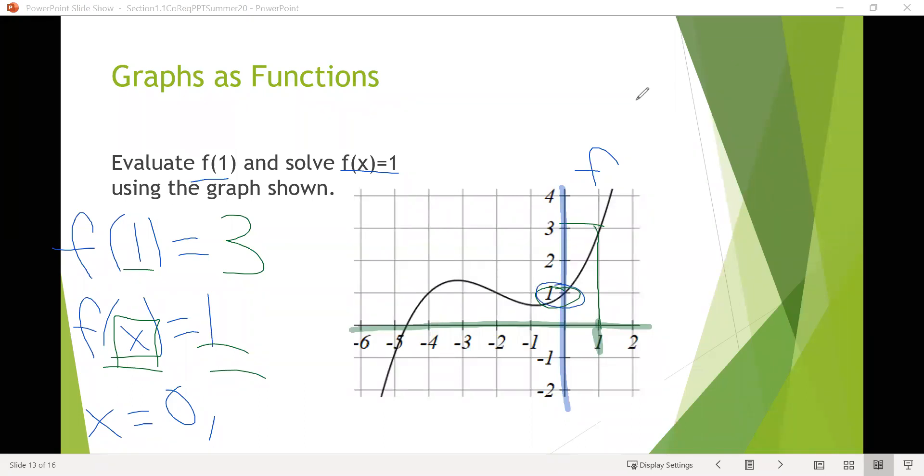But notice that's not the only place where an input gives us an output of 1. An input of negative 2 also gives us an output of 1, and an input of negative 4 also gives us an output of 1. So it looks like there were actually three possible inputs that could give us that same output. Does that mean this function is a one-to-one function? The answer is no, because we see that multiple inputs are related with the same output.